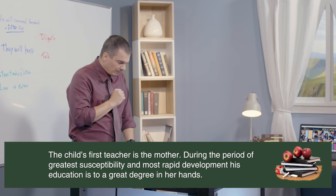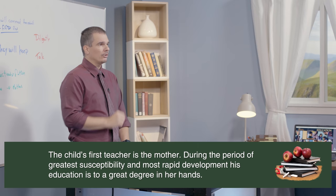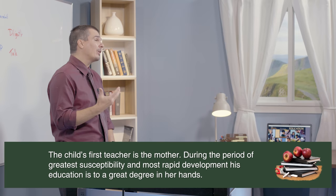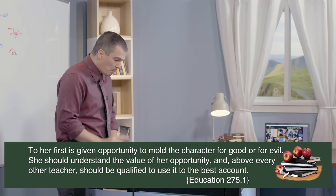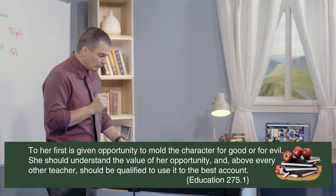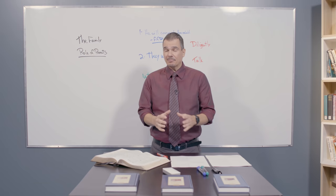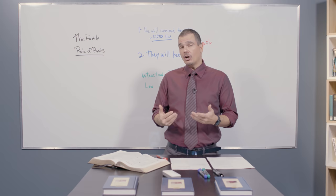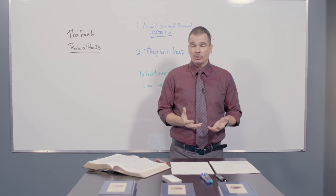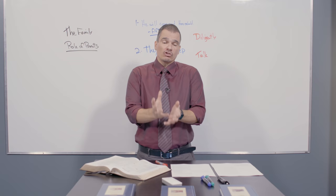For mother, it says in Education 275, the child's first teacher is the mother. During the period of greatest susceptibility and most rapid development, his education is to a great degree in her hand. To her, first is given opportunity to mold the character for good or evil. She should understand the value of her opportunity and above every other teacher, should be qualified to use it to the best account. This is strong and important, but yes, the outcome lays a lot in the hands of the mother. That is why she has a greater role than any preacher, any evangelist, any pastor, any president of any country. Her role is the most important because she is molding a child, either in the likeness of God or in the unlikeness of God.